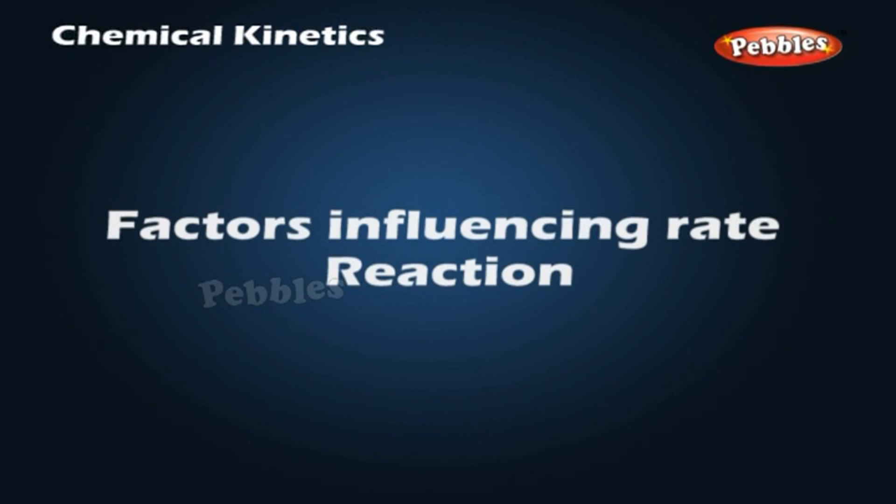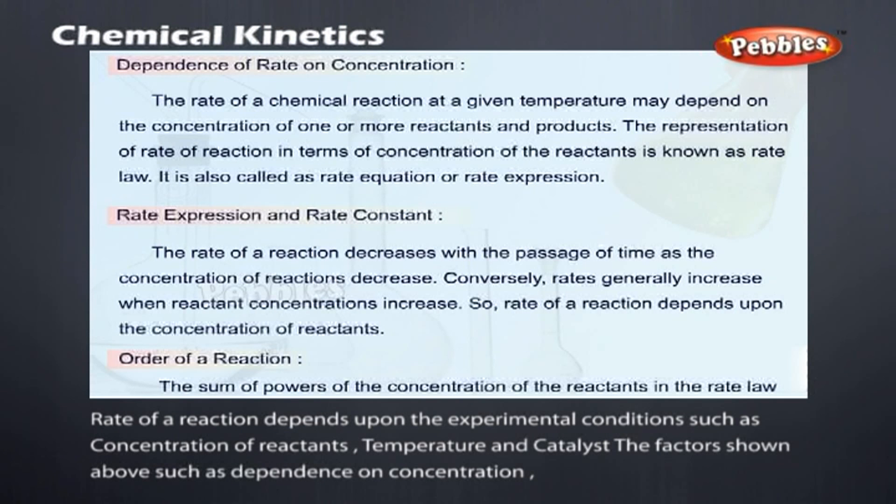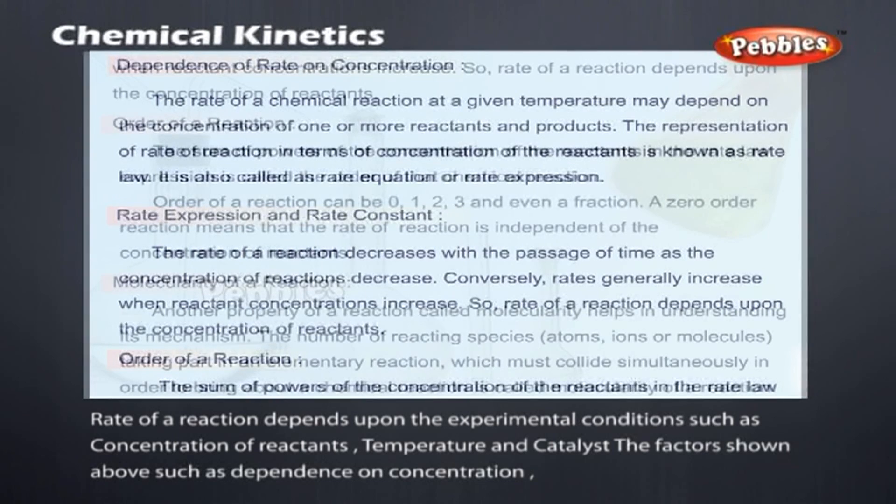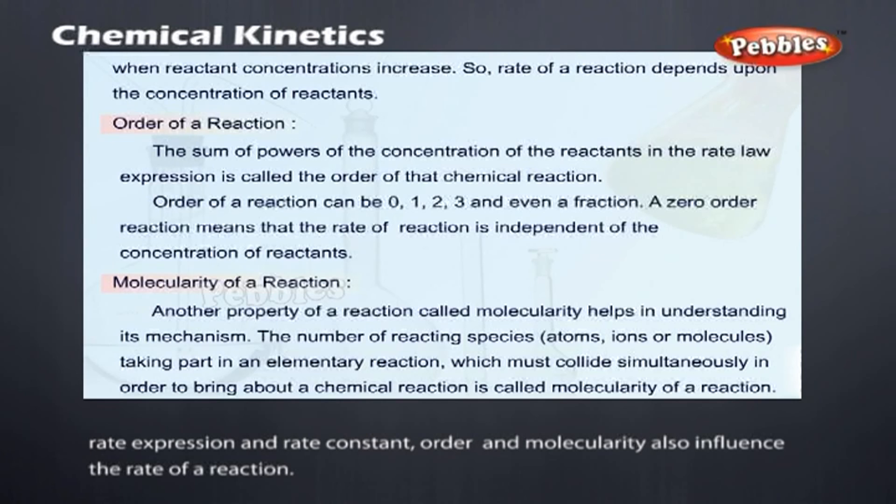Factors influencing rate of reaction. Rate of a reaction depends upon the experimental conditions, such as concentration of reactants, temperature, and catalyst. The factors shown above, such as dependence on concentration, rate expression, and rate constant, as well as order and molecularity, also influence the rate of a reaction.